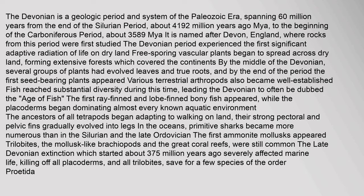The Devonian is a geologic period and system of the Paleozoic era, spanning 60 million years from the end of the Silurian period, about 419.2 million years ago, to the beginning of the Carboniferous period, about 358.9 million years ago. It is named after Devon, England, where rocks from this period were first studied. The Devonian period experienced the first significant adaptive radiation of life on dry land. Free-sporing vascular plants began to spread across dry land.